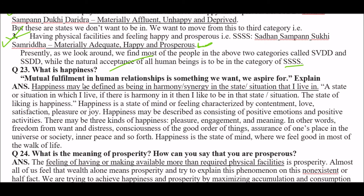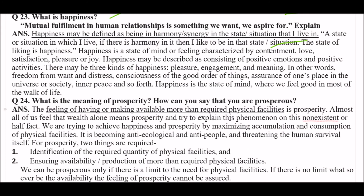Question: what is happiness? Happiness may be defined as being in harmony or synergy in the state or situation that I live in. If there is harmony in it, then I like to be in that state — the state of liking is happiness. Happiness is a state of mind or feeling characterized by contentment, love, satisfaction, pleasure, or joy. It may consist of positive emotions and positive activities. There may be three kinds of happiness: pleasure, engagement, and meaning. In other words, freedom from bondage and distress, consciousness of the good order of things, assurance of one's place in the universe or society, and inner peace. Happiness is the state of mind where we feel good in most aspects of life.